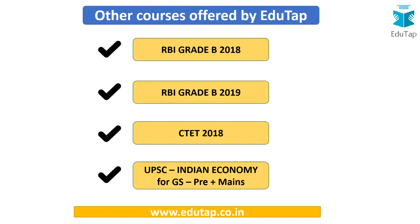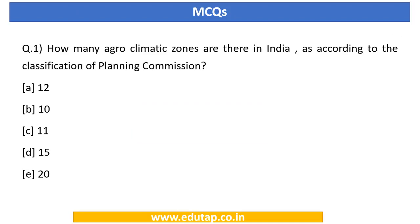Presenting the first MCQ of the series: how many agro-climatic zones are there in India according to the classification of the Planning Commission? Your options are 12, 10, 11, 15, or 20. If you are not able to answer this question now, you will definitely be able to after this video.